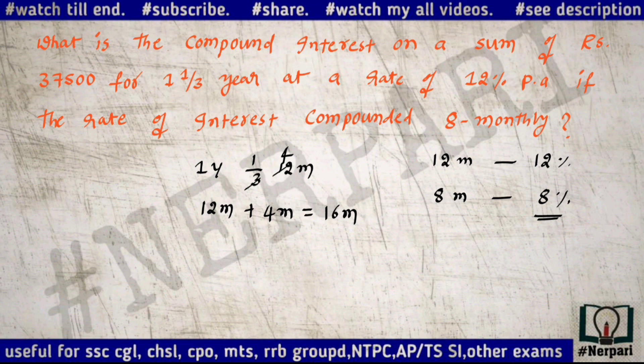Every 8 months it will be compounded. If it is compounded, it will increase each year. Here it is 8% and it will increase over 16 months — so every 8 months it will be compounded. One cycle is 8%. This month it will be 8% of 37,500. That means there are 2 cycles — 8% of 37,500 each.